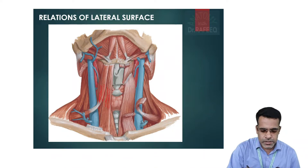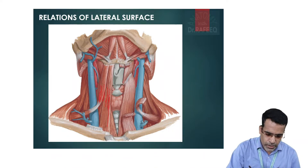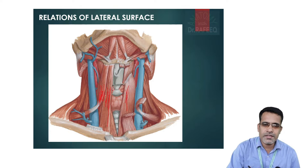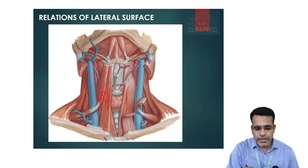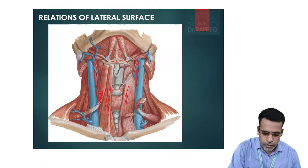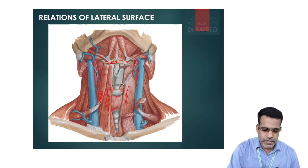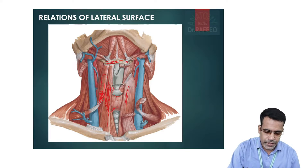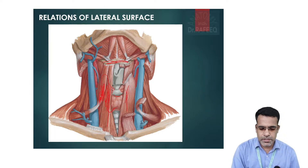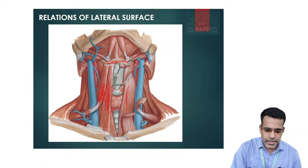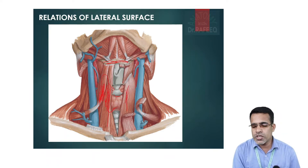The infrahyoid muscles related to the lateral surface include sternohyoid, sternothyroid, and omohyoid — also called strap muscles, located in front of the neck just below the hyoid bone. Outer to these muscles you may find the fascia and the skin of the neck.